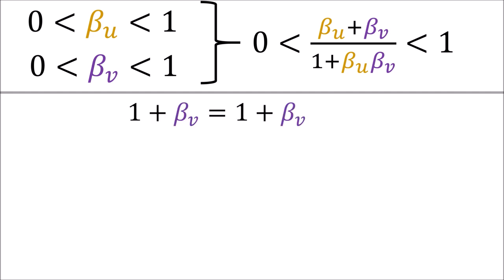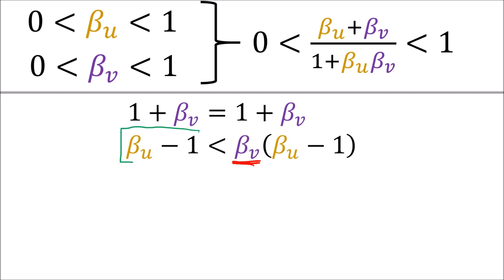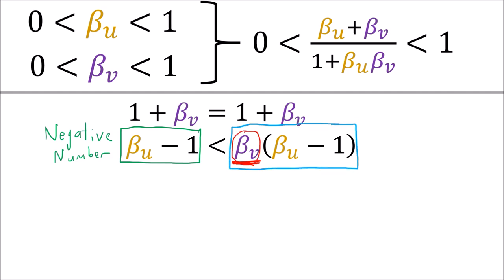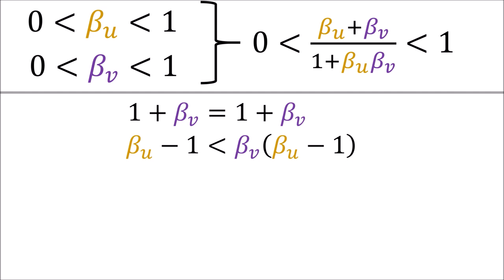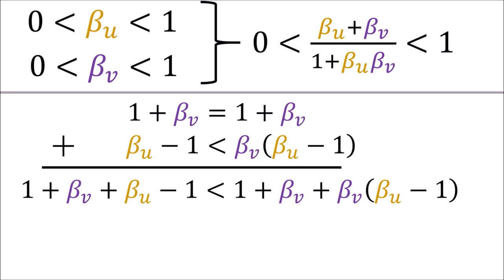Here's the proof. We can agree that (1 plus beta-v) equals (1 plus beta-v). What's less obvious is that (beta-u minus 1) is less than (beta-u minus 1) multiplied by beta-v. Since beta-u is between 0 and 1, then beta-u minus 1 is a negative number. On the right-hand side, we're shrinking the size of this same negative number by the fraction beta-v, giving us a negative number closer to 0. So the left-hand side is more negative — therefore less than the right-hand side.